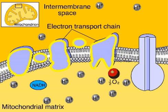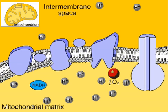The electron transport chain is an array of molecules, mostly proteins, built into the inner membrane of the mitochondrion.